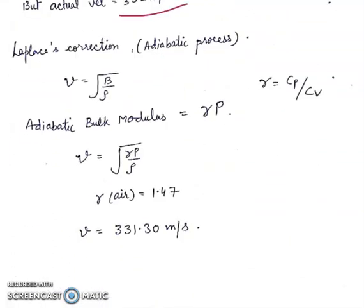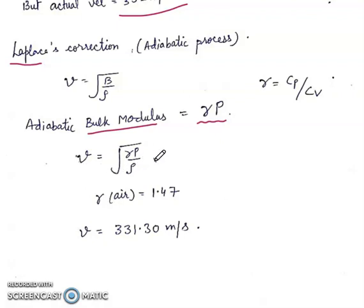Then there was the Laplace correction. Laplace said this process is adiabatic. So the adiabatic bulk modulus of air is γP, giving V = √(γP/ρ), where γ = Cp/Cv. The gamma of air is 1.47, and when these values are substituted, velocity comes out to 331.30 m/s.